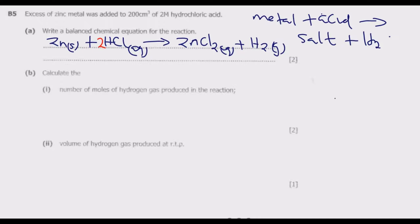Question B: Calculate the number of moles of hydrogen gas produced in the reaction. Looking at the mole ratio: 1 mole of Zn, 2 moles of HCl, 1 mole of ZnCl₂, and 1 mole of H₂. We need to find the moles in 200 cm³ of 2 molar hydrochloric acid.